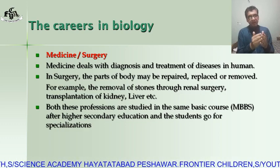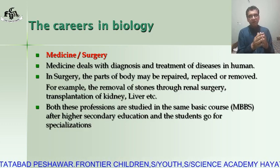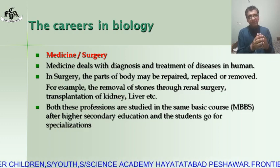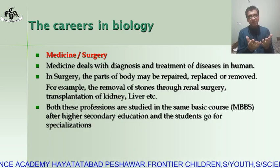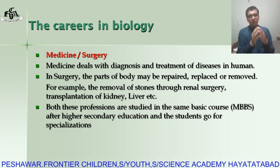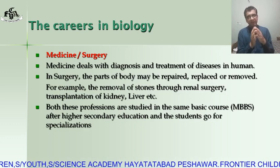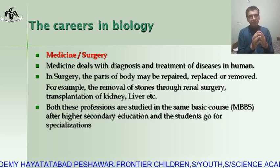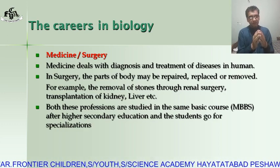Secondary education — classes nine and ten — is also called Matric, and higher secondary education is called FSc. In FSc first year and second year, that is class eleven and twelve, you have a choice to select either biology or mathematics. If you adopt biology, you can pursue the field of medicine or surgery after higher secondary education.